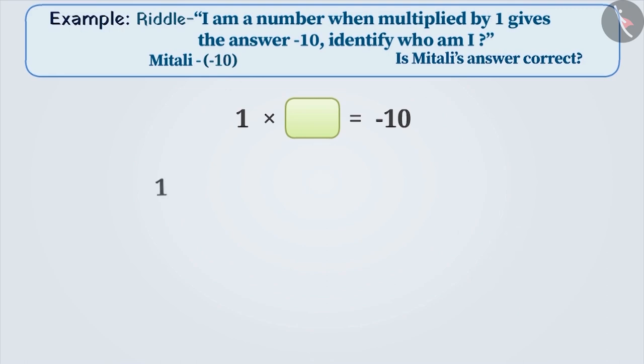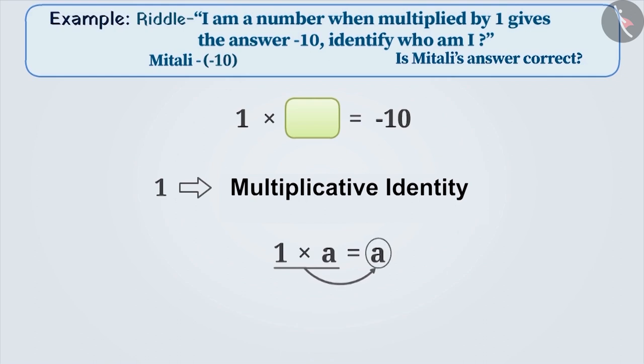Let me tell you. 1 is the multiplicative identity of integers. That means when any integer is multiplied with 1, we get the same integer. The general form is 1 into a is equal to a.